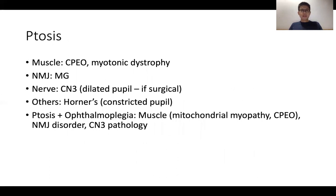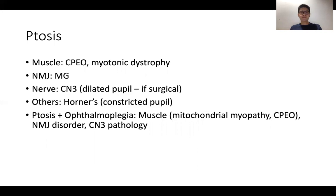Ptosis is seen fairly frequently in PACES. The neurological conditions to consider are myasthenia, cranial nerve 3 palsy, and Horner's. Think in terms of whether it's bilateral or unilateral, whether there's associated pupillary dysfunction, or any associated ophthalmoplegia.